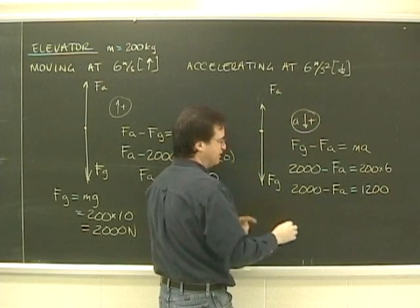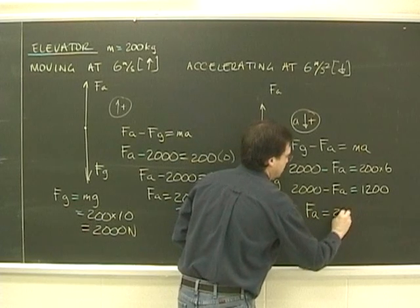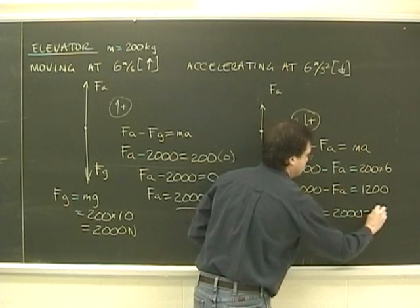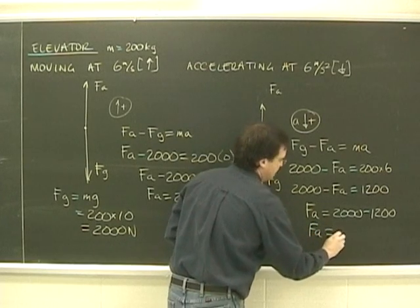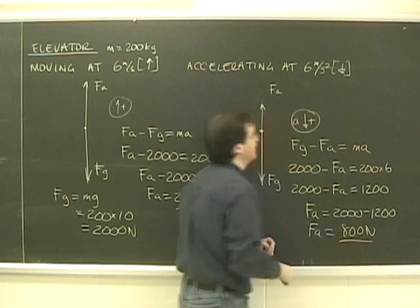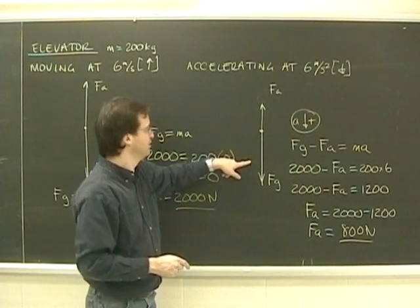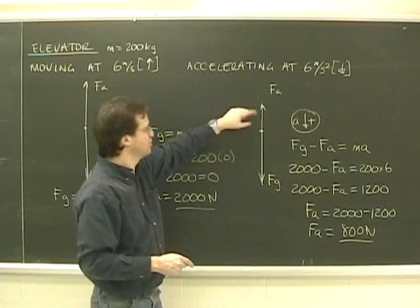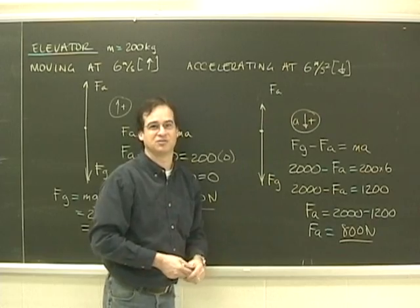So I rearrange this. And I'm going to skip a couple of steps. But FA equals 2000 minus 1200. FA is 800 newtons. And I should just check. Does that make sense? Well, the downward force was 2000. The upward force is 800. So I have more force down than up. This thing is going to accelerate down, which it's doing at 6 meters per second squared.